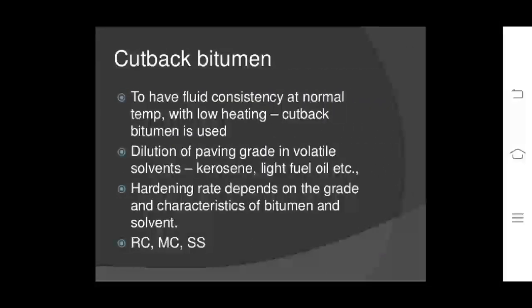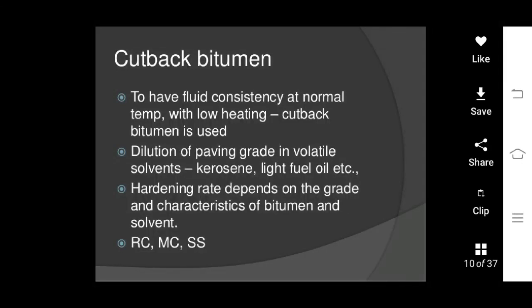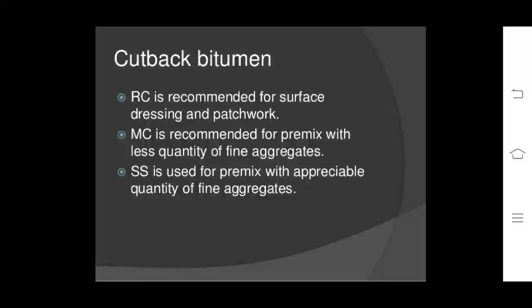Cutback bitumen: to have fluid consistency at normal temperature with low heating, cutback bitumen is used. It is made by dilution of paving grade bitumen in volatile solvents such as kerosene and light fuel oil. Hardening rate depends on the grade and characteristics of bitumen and solvent. RC, MC, and SC are the cutback bitumen types. RC is recommended for surface dressing and patchwork, MC is recommended for premix with less quantity of aggregates, and SC grade cutback bitumen is used with an appreciable quantity of fine aggregates.